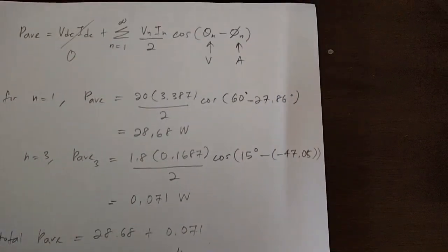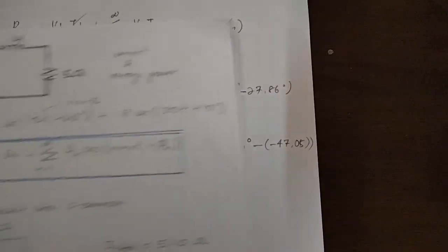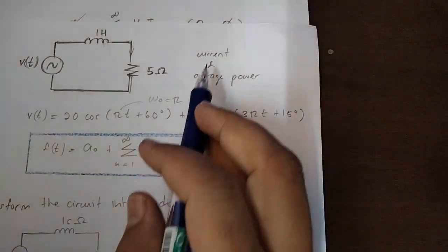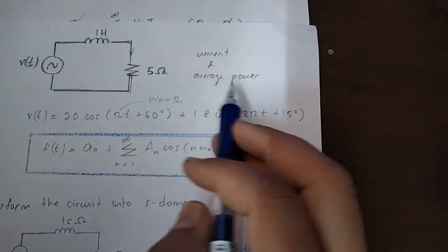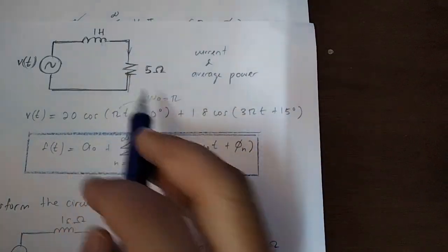That's all — that's the answer for the circuit: how to determine the current and average power for a circuit supplied with a Fourier series voltage source.